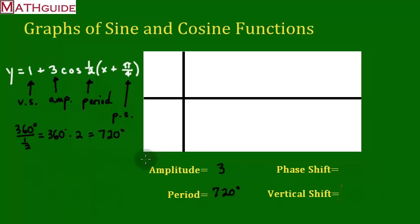Let's move on to phase shift. Phase shift is this value, π over 4, but you take the opposite of it. So it's going to be negative π over 4. Now, if you haven't already noticed, we have our period is in degrees. We have the phase shift is in radians. That's a problem.